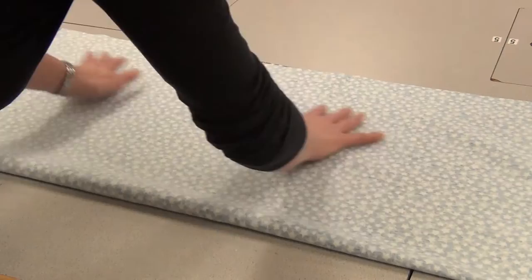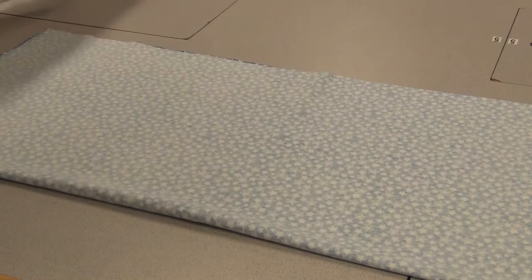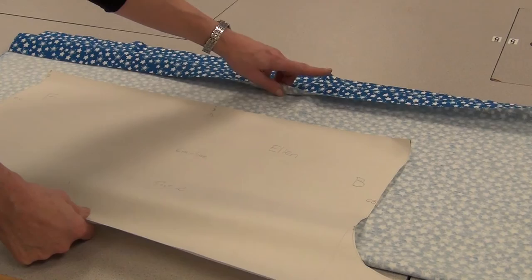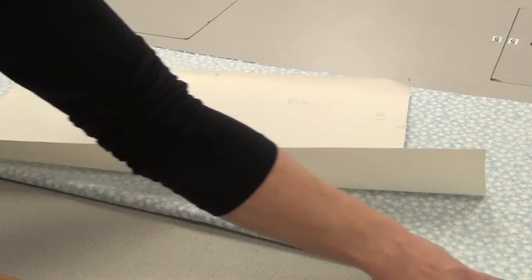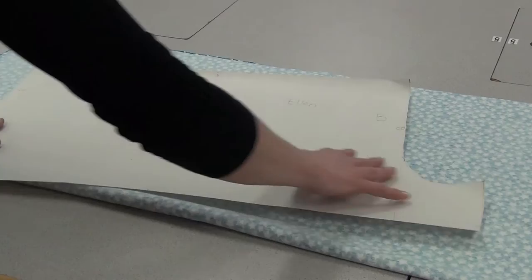Get out any wrinkles or folds, have it nice and flat. This particular fabric has no nap or direction. It doesn't matter which way the stars go but if you have fabric that has a particular direction, then we actually will have to cut the length of the fabric here and put the two of them together so that they're both going in the same direction. Otherwise, one leg will actually be upside down.